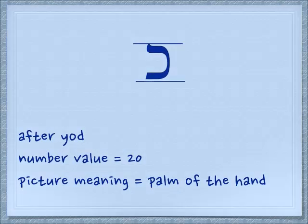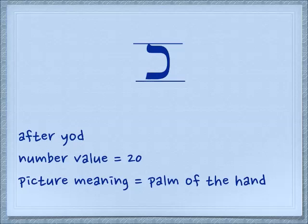The first letter we're learning today is the Kaf. This is the letter which appears right after the Yud, which we learned much earlier. The number value is 20. You'll see two figures under the number 20 because the Kaf also has a final form, and we'll learn that later.